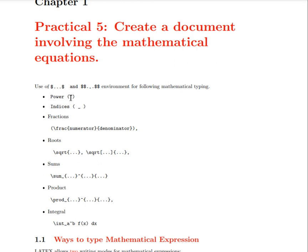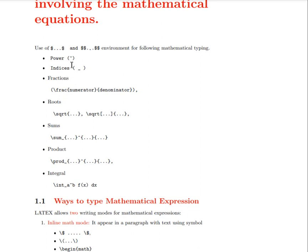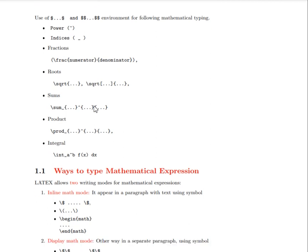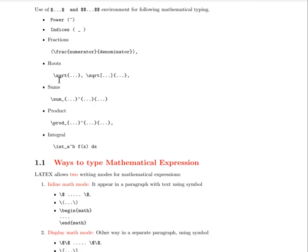The first command is power — how to write the power of a variable or a function. Suppose you want to write x plus y whole square. We will use the caret symbol for this. You will find this on the sixth key of the keyboard. For subscript, you use the underscore. For fractions, there is a specific code. For writing roots, it can be done using backslash sqrt with curly brackets or with square brackets for nth roots. I will share the syntax and corresponding outputs in the PDF.